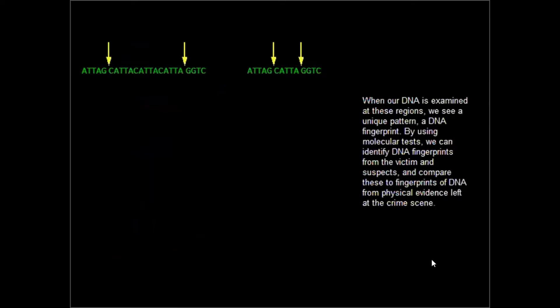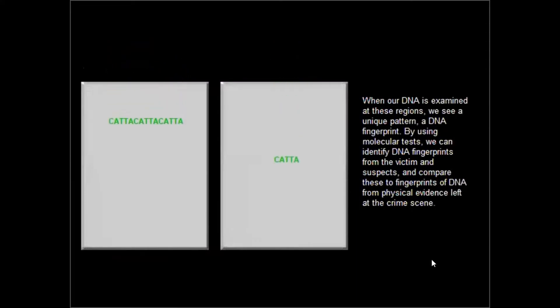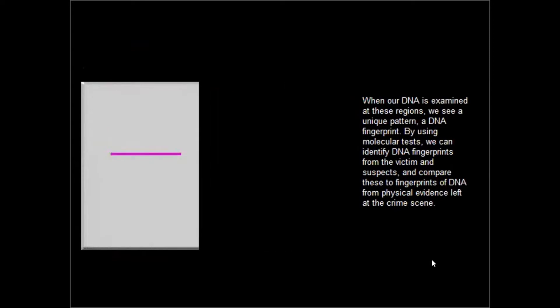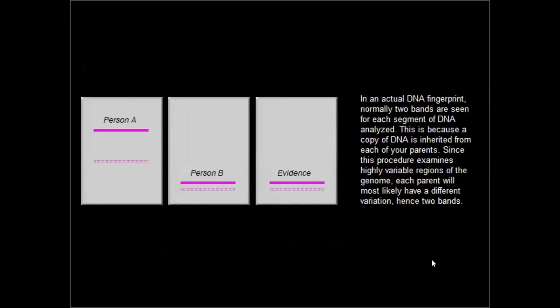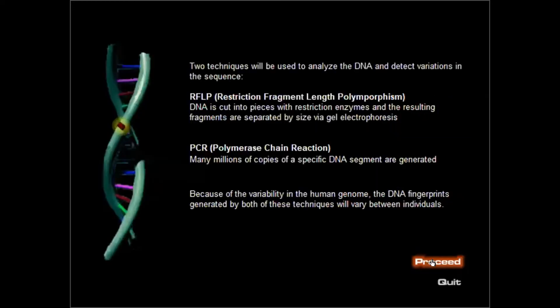When our DNA is examined at these regions, we see a unique pattern — a DNA fingerprint. By using molecular tests, we can identify DNA fingerprints from the victim and suspects, and compare these to fingerprints of DNA from physical evidence left at the crime scene. In an actual DNA fingerprint, normally two bands are seen for each segment of DNA analyzed, because a copy of DNA is inherited from each of your parents. Since this procedure examines highly variable regions of the genome, each parent will most likely have a different variation, hence two bands.